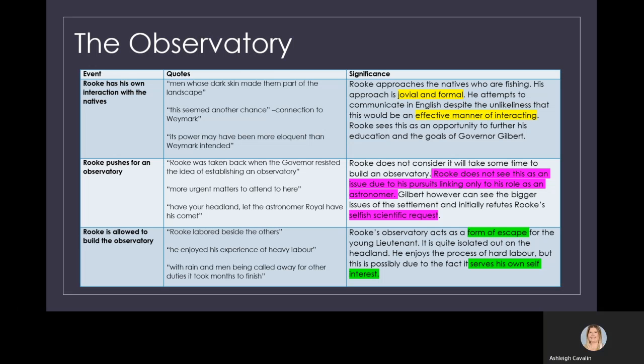The Observatory. This part is inspired by the fact that Rook has his own interaction with the natives. Rook approaches the natives who are fishing. His approach is very jovial and formal. He attempts to communicate in English, despite the unlikeliness that this would be an effective manner of interacting. However, probably a better approach than Surgeon Waymark, who shot at them.